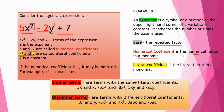The numbers 5 and −2 are called numerical coefficients — the numerical factor in a monomial. Meanwhile, x² and y are called literal coefficients — the literal factor in a monomial. The number 7 is a constant. If the numerical coefficient is 1, it may be omitted; for example, x² means 1x².